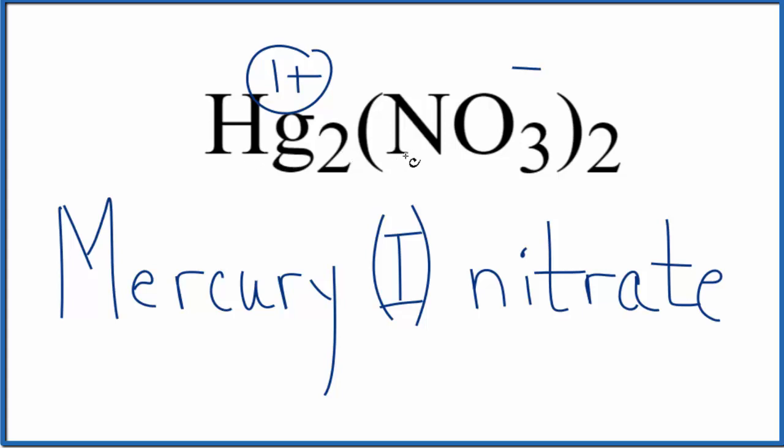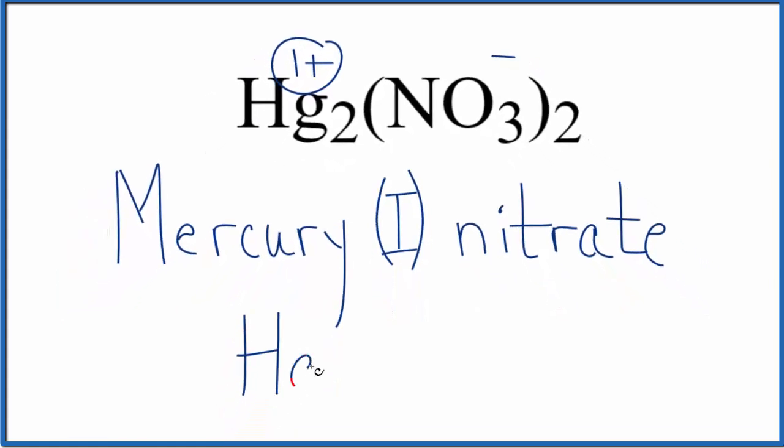You might ask, why didn't we just have HgNO3? The charge would balance as well. But the mercury one ion, it's a little bit strange. It's Hg2 with two plus. So the ion has a two plus charge. Each mercury has a charge of one. That's why it's the mercury one ion. But this stays together, kind of like a polyatomic ion.